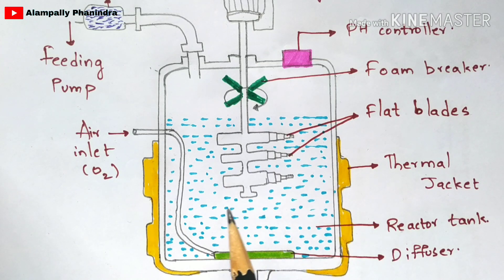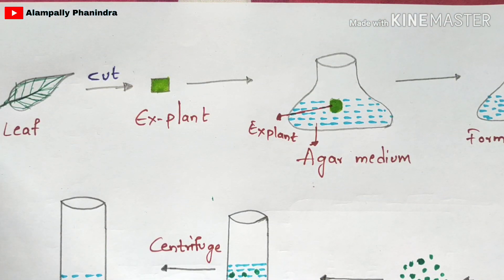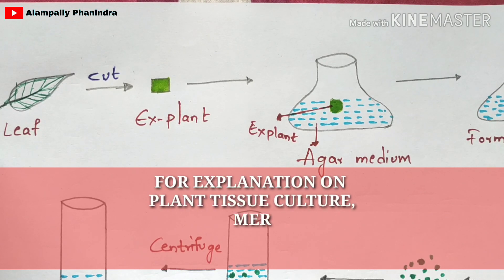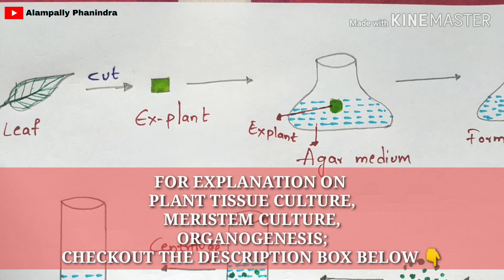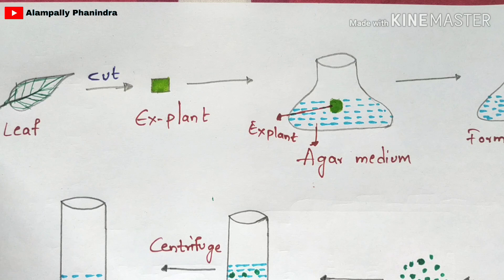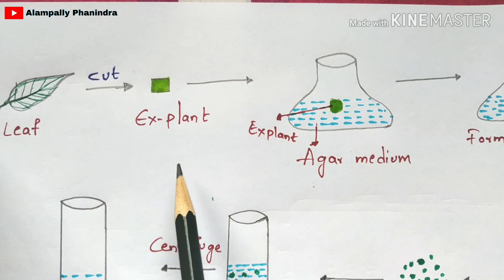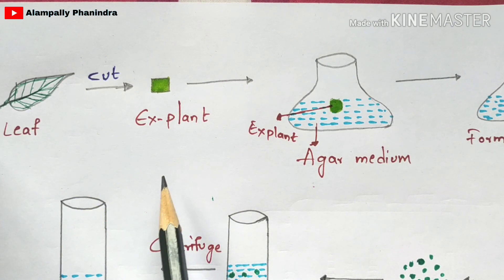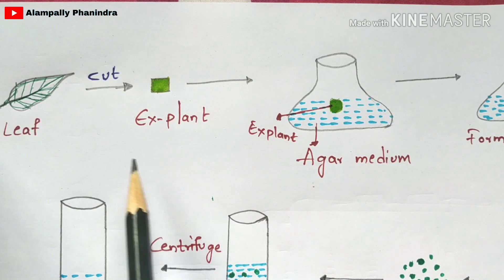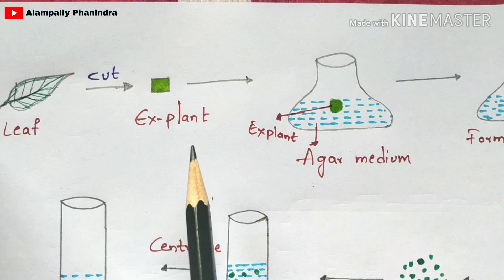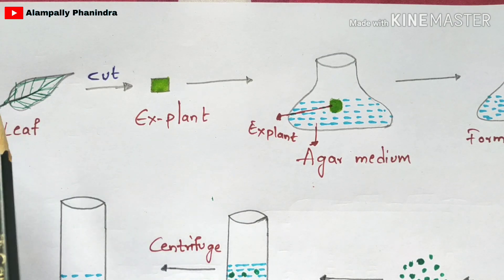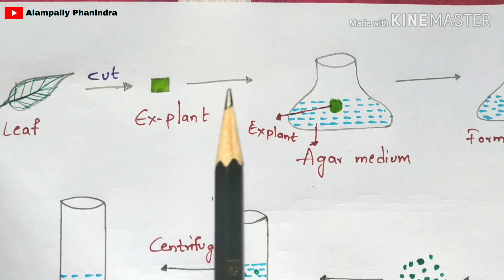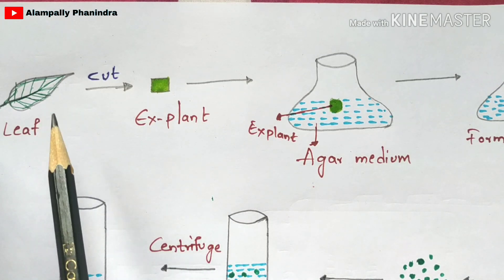First, let us see the procedure of cell suspension culture. The first step is selection of a mother plant, as we know from plant tissue culture technique. The mother plant is selected based on proper development of the shoot system as well as the root system. From the shoot system, we are going to take a leaf — though you can also take flowers or meristem, depending on your choice. Normally for every tissue culture technique, a leaf is taken.